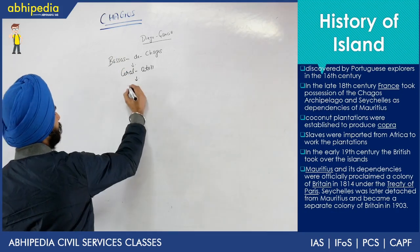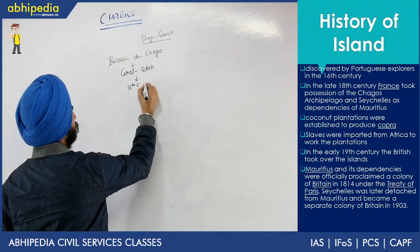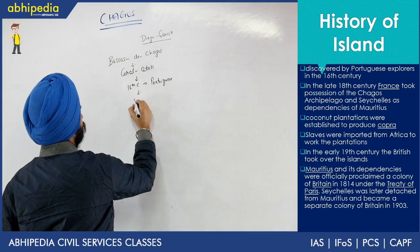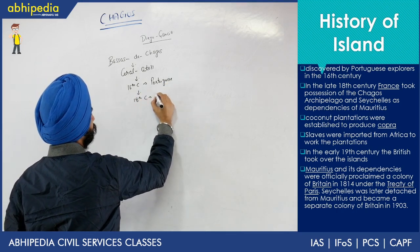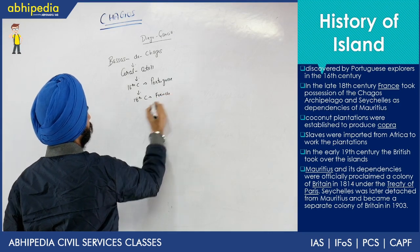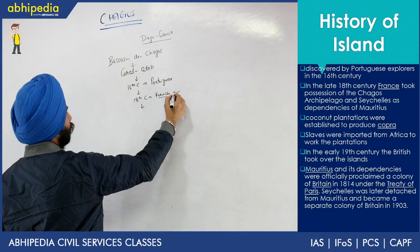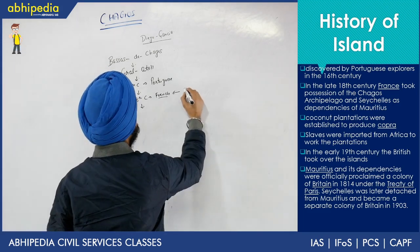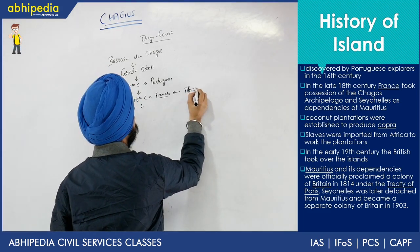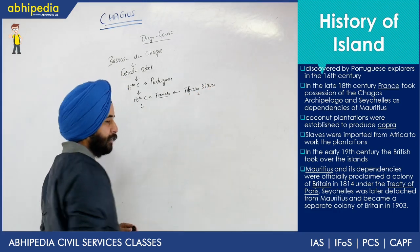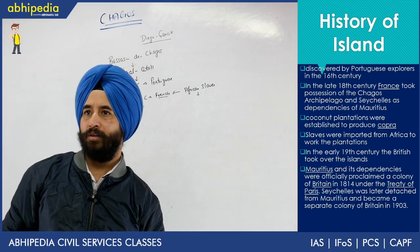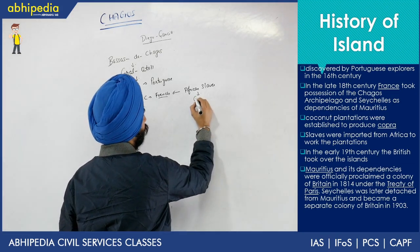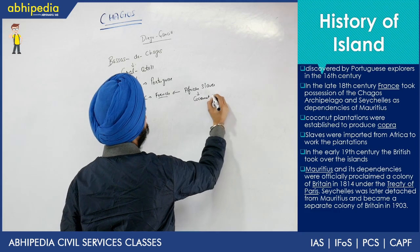Going back to history — in the 16th century it was found by the Portuguese. In the 18th century it was taken over by the French. The French brought African slaves from Africa to settle here. Those African slaves did cultivation of coconut to produce copra, and also fishing. So their occupation was coconut cultivation plus fishing.